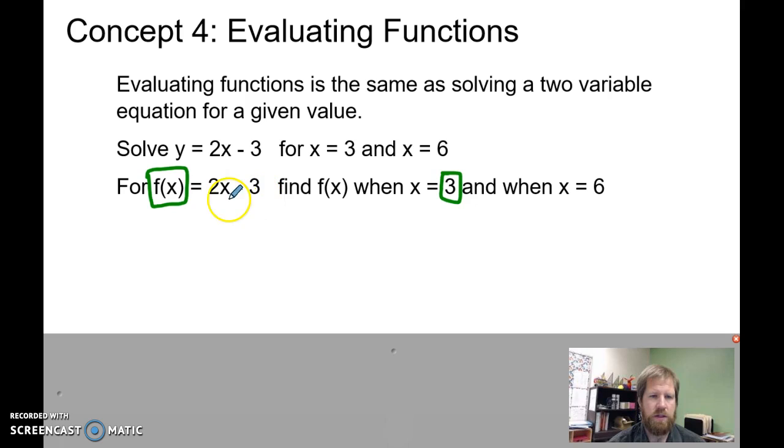So, 2x minus 3 equals f of x. When x equals 3, we have 2 times 3 minus 3 equals the f of... And we can put this in here, because we are putting in our 3 for our x.